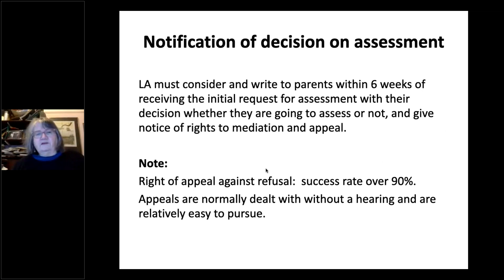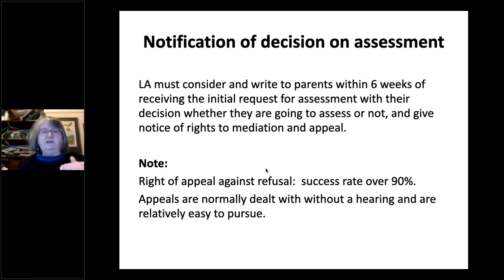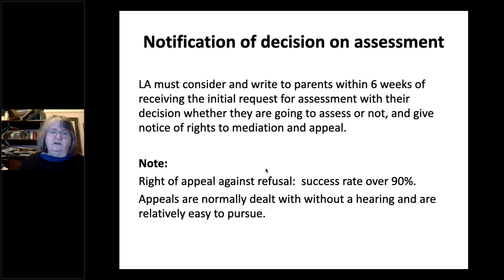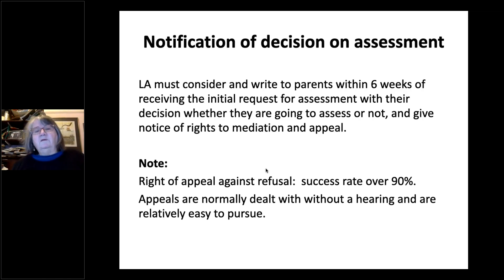If they decide not to assess, they must tell you within six weeks and inform you of your right to appeal. I would virtually always advise a parent to appeal at this stage because it's a relatively easy process — it's on paper, so there's no hearing, and over 90% of cases succeed, either because the local authority concedes or parents win the appeal. The current tribunal delays apparently don't apply to this type of appeal because it's a paper process.